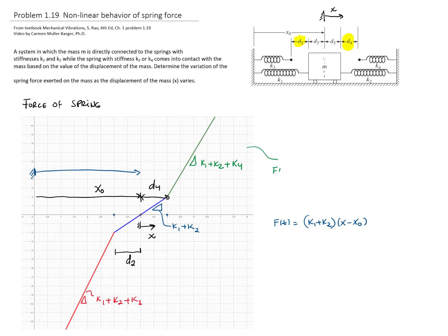For this section of the curve, the function will be k1 plus k2 times x minus x sub 0, plus k4 times x minus x sub 0 minus d4.